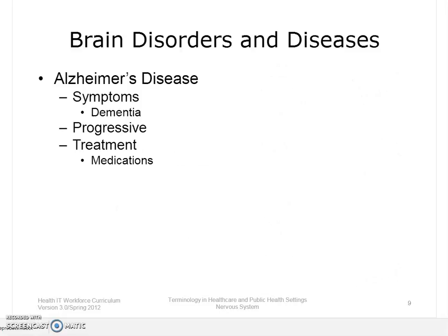Let's move on to various disorders and diseases of the brain. Dementia is a brain disorder that seriously affects a person's ability to carry out daily activities. Alzheimer's disease is the most common form of dementia among older people. It begins slowly by first involving the parts of the brain that control thought, memory, and language. Over time the symptoms get worse — people may not recognize family members, forget how to brush their teeth, and eventually may become anxious or aggressive. People with Alzheimer's disease require assistance with all activities of daily living. It usually begins after age 60, and while no treatment can stop the disease, some drugs may help keep symptoms from getting worse for a limited time.